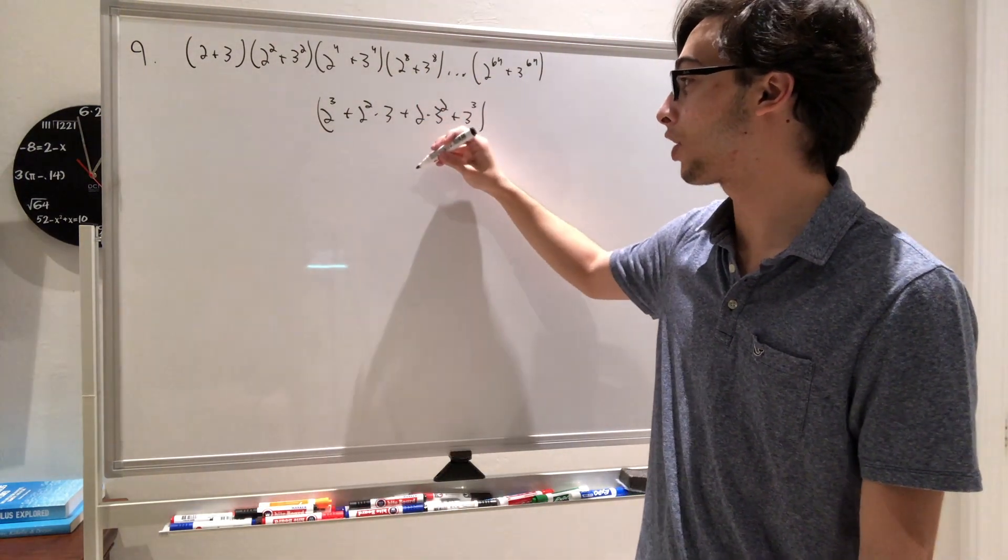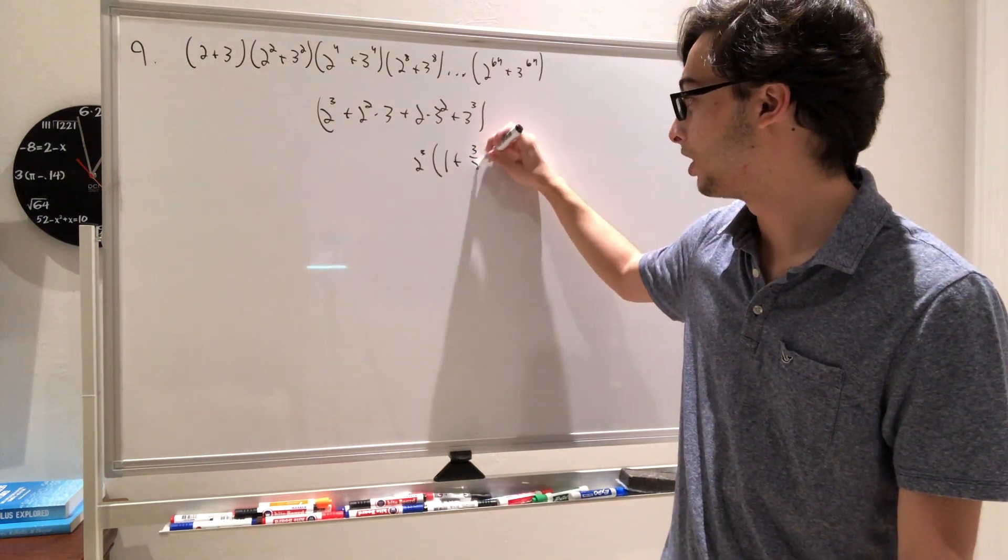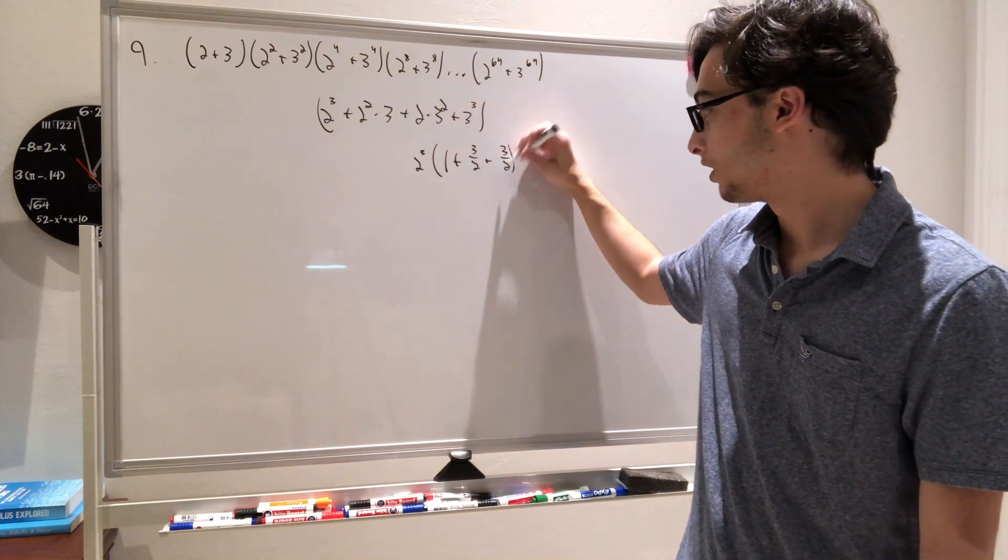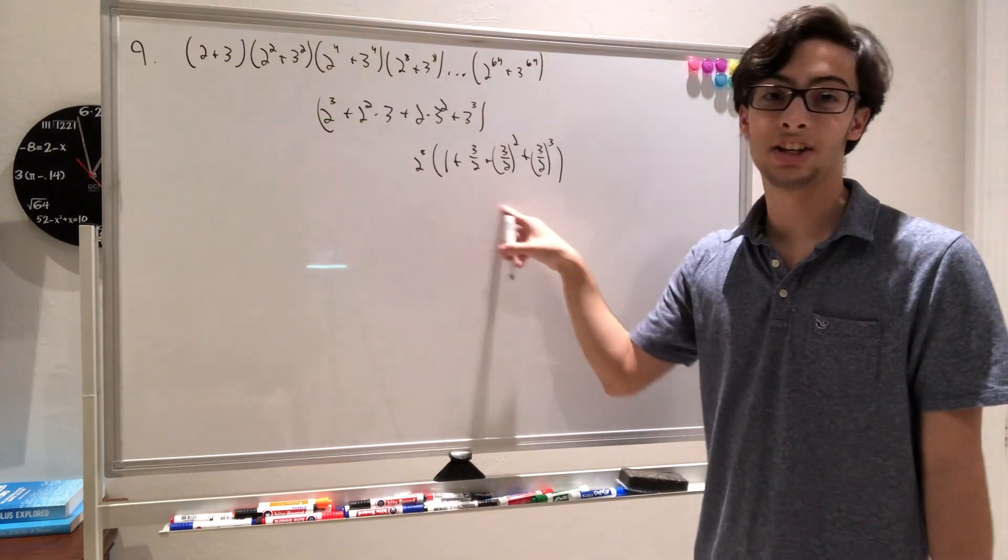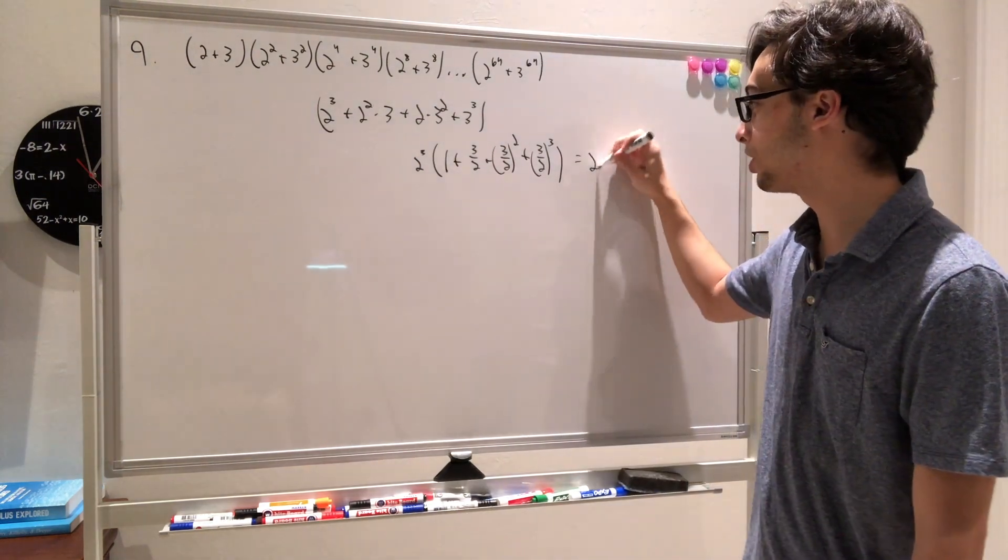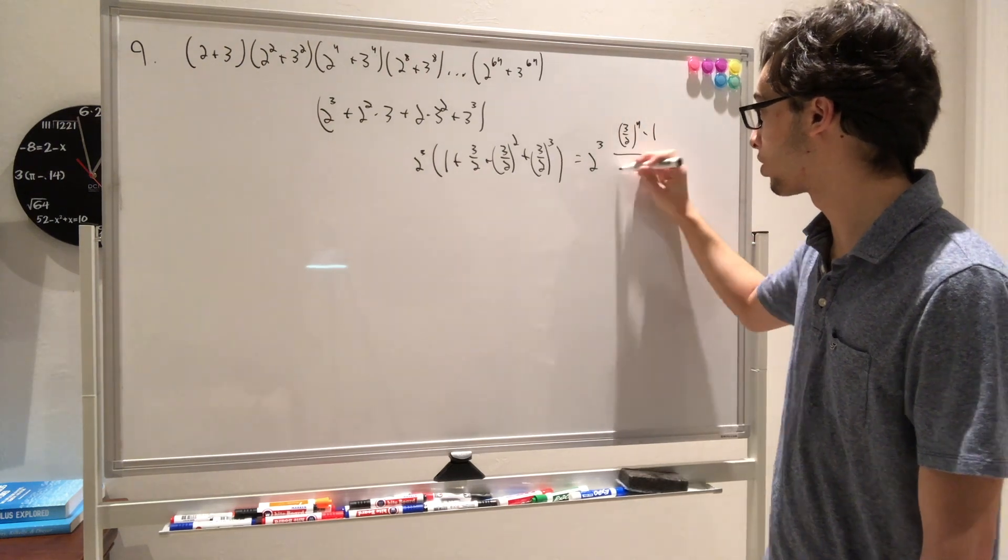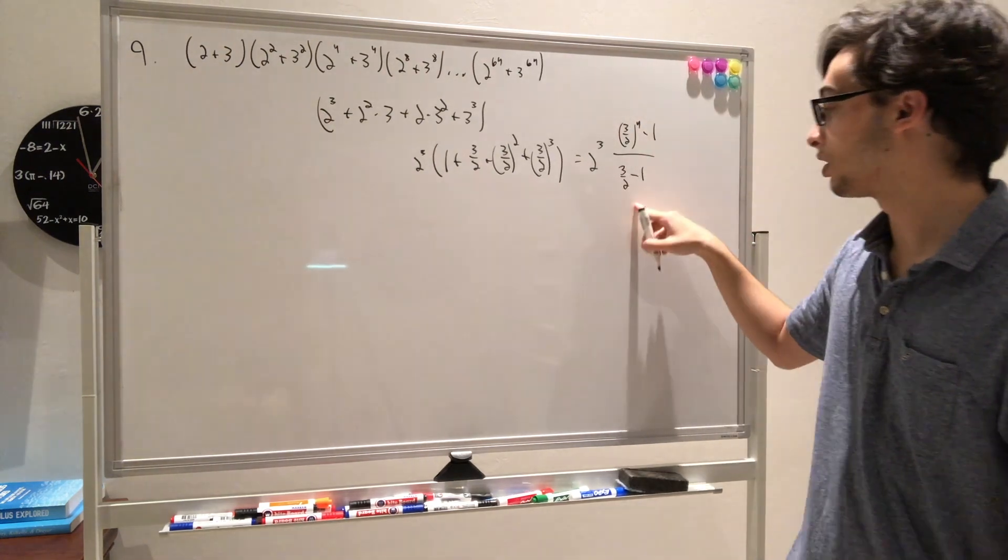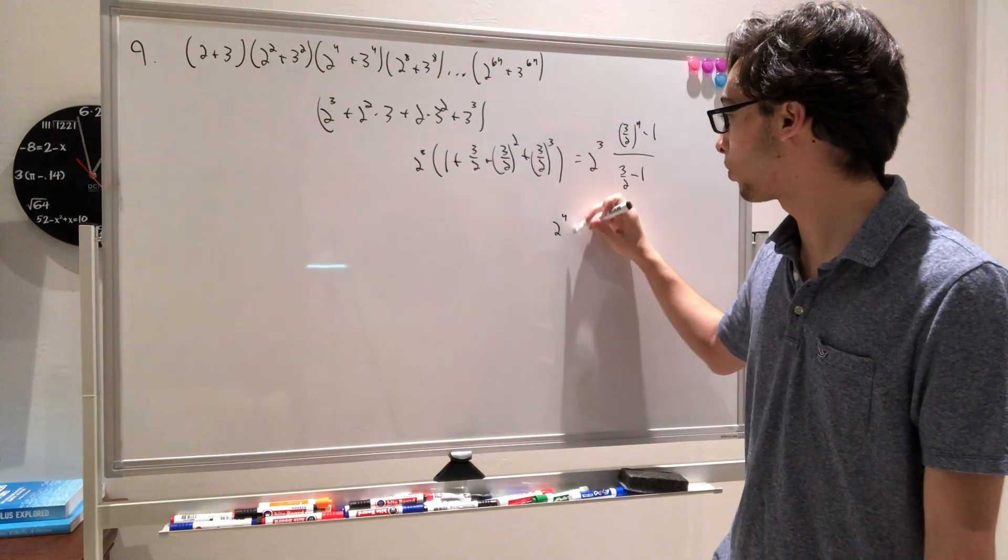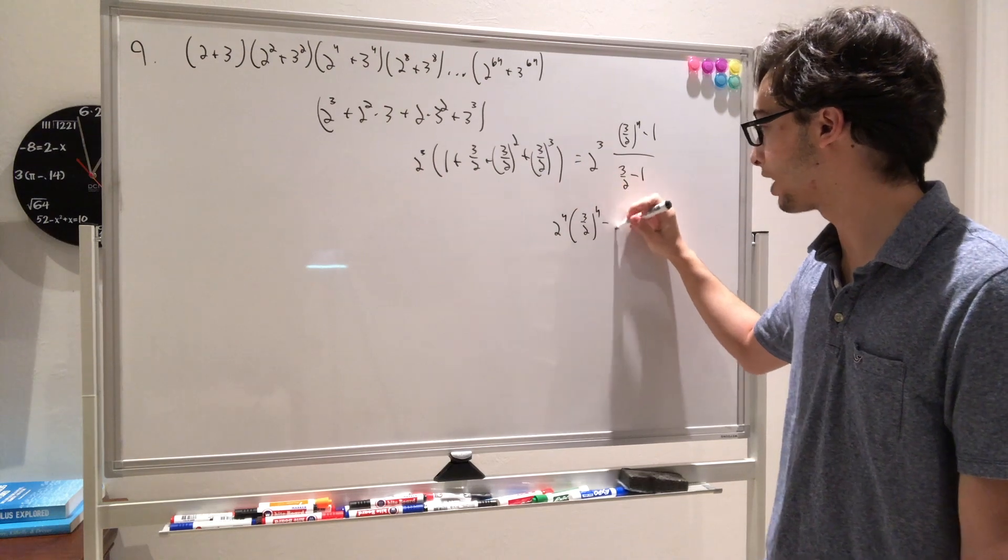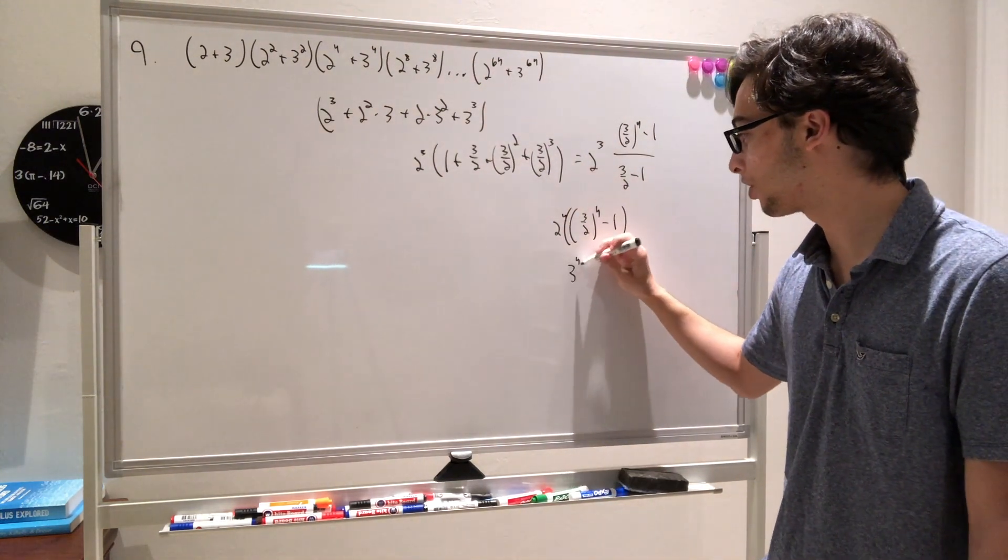If we factor out 2 cubed, then we get 2 cubed times 1 plus 3 halves plus 3 halves squared plus 3 halves cubed. And so then this is a finite geometric series. So we have this equals 2 cubed times 3 halves to the 4th minus 1 over 3 halves minus 1. So 3 halves minus 1 is 1 half in the denominator, which really just gives us 2 to the 4th. So we have 2 to the 4th times 3 halves to the 4th minus 1. And then expanding out this 2 to the 4th, we have 3 to the 4th minus 2 to the 4th.